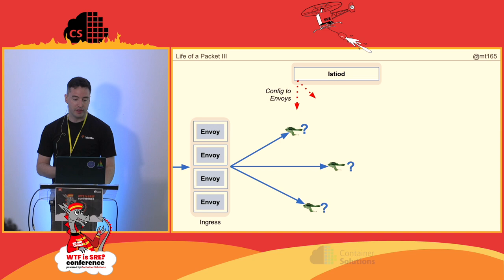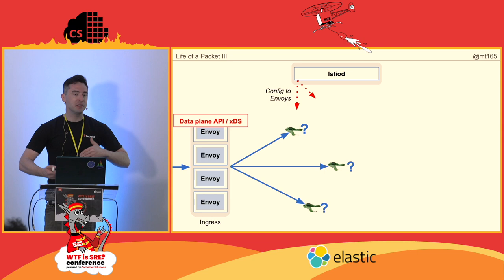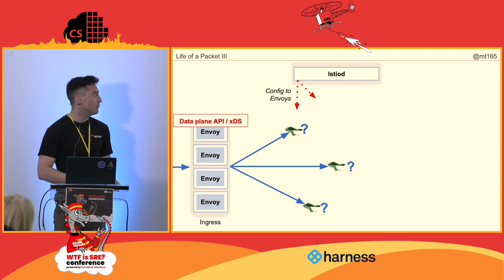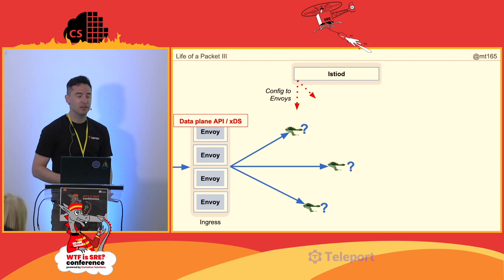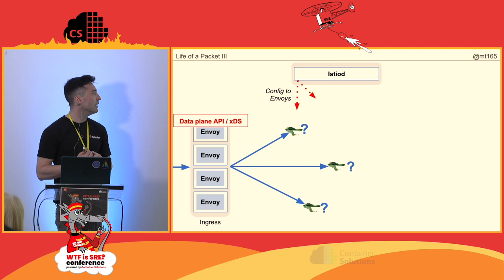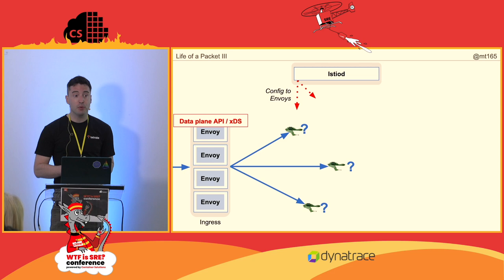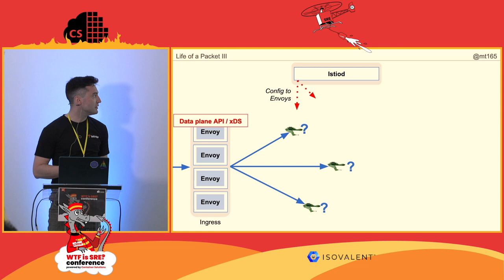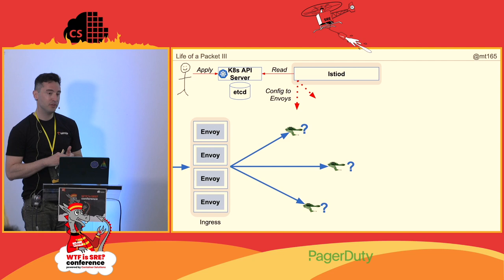Envoy was designed from the ground up to be a modern API-driven thing. You don't configure it with files on disk and send it SIGHUP — it's got an API that accepts config. A lot of work was done to standardize and open this specification, calling it the data plane API. That means Envoy doesn't lock you in — it could be replaced by another proxy that implements the same API. So you can theoretically replace either the control plane or the data plane.